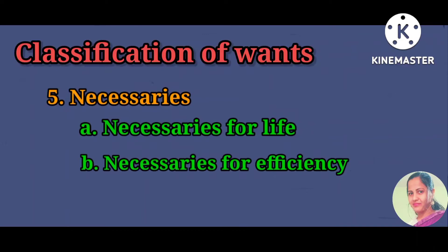We can live without necessaries for efficiency, but their long absence may decrease our efficiency. For example, a teacher without books, library, or training will have decreased efficiency. A student without a table and chair may have reduced study hours, which automatically leads to a decrease in working capacity and efficiency.